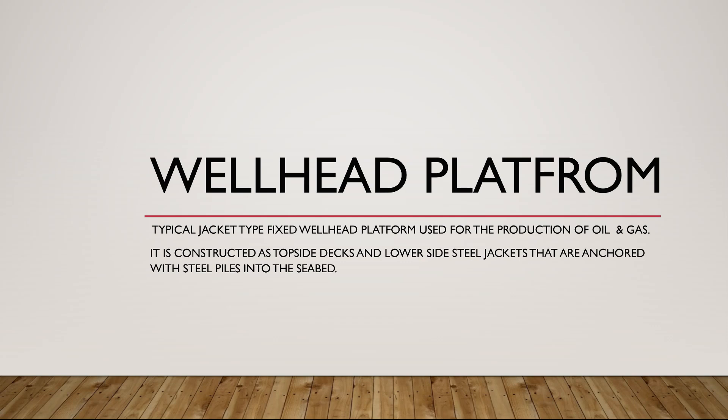Bismillahirrahmanirrahim. Hi viewers, today we will discuss the wellhead platform. This wellhead platform is a jacket type fixed wellhead platform. It has two major parts: the top side consists of different decks, and the lower side consists of the jacket, which is anchored with the piles in the seabed. Let's discuss the different parts of the wellhead platform and their different levels.